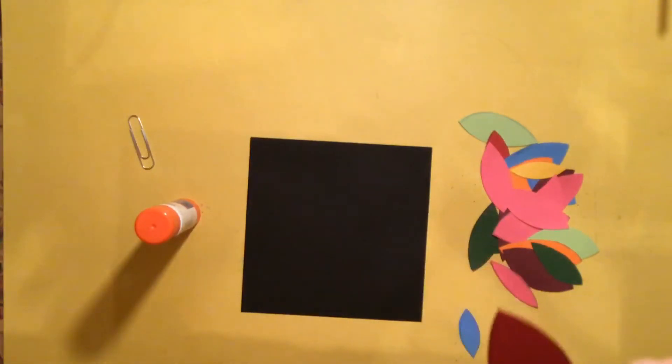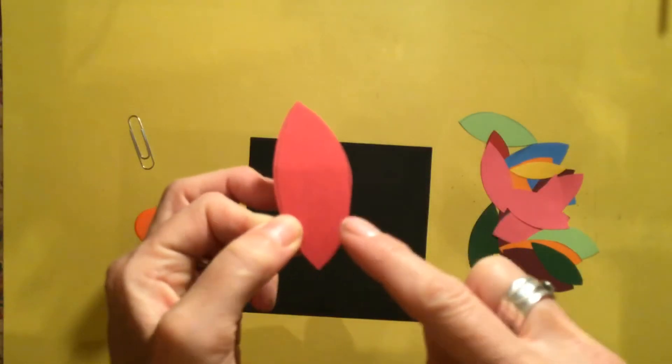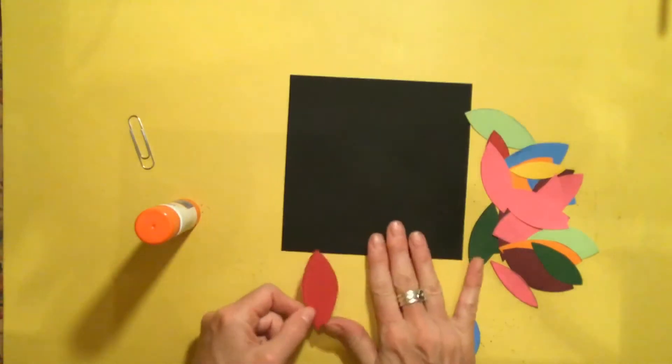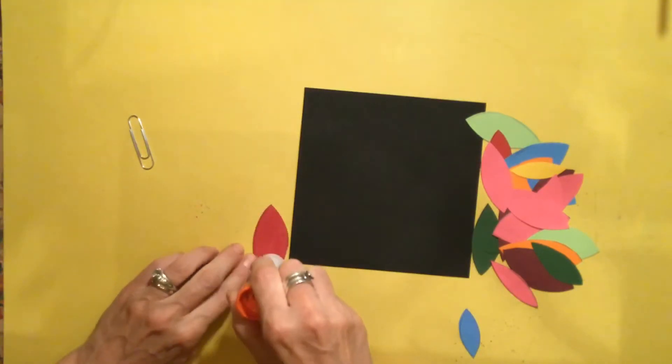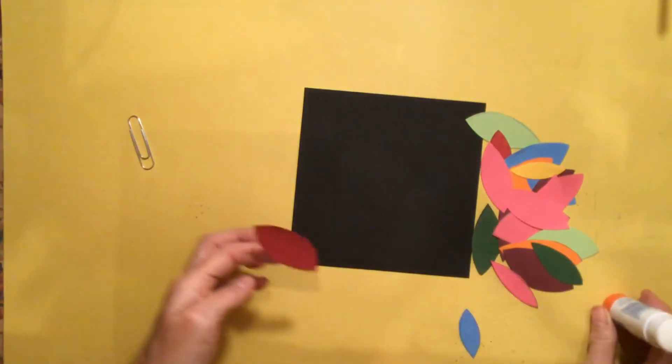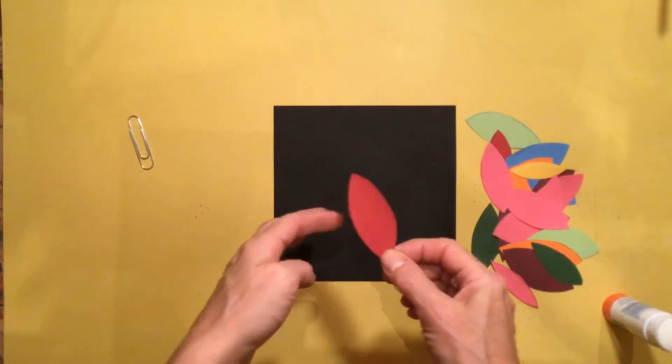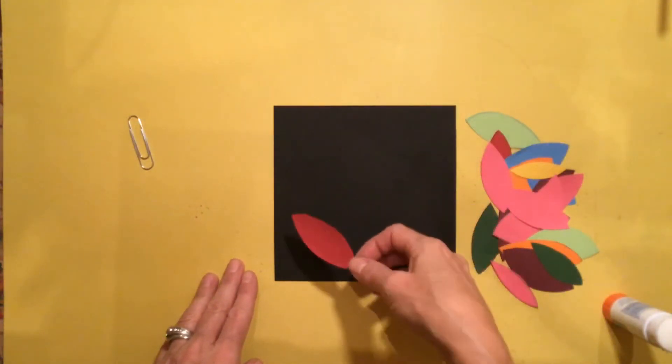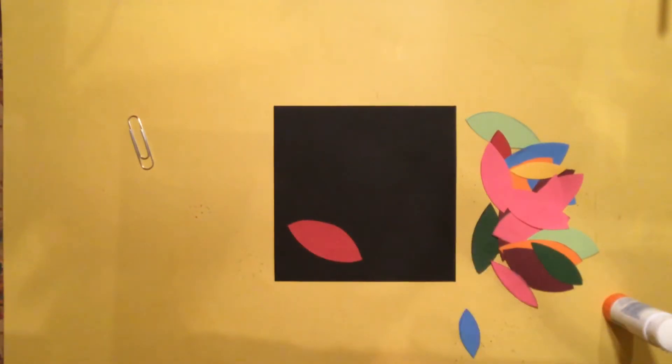What I want you to notice is on the back of this leaf, you can see some pencil lines, and that's the side where you want to put the glue. So what I'm going to do is take my glue stick, put a little bit of glue on the back of this leaf, and then I'm going to pretend like it is making its way from the tree down to the ground. And there's my leaf.